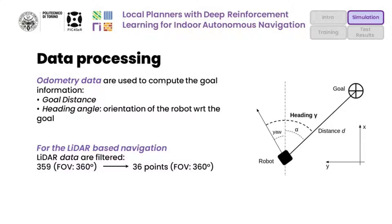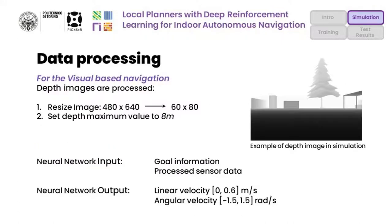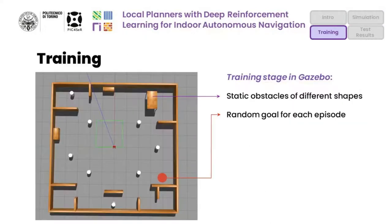For the LiDAR-based navigation, we simply filter the LiDAR points from 360 to 36 points, always keeping a field of view of 360 degrees. For the visual-based navigation, we resize the image from a higher resolution to a lower one, and then we set the depth maximum value to 8 meters. The neural network input is composed of the goal information and the processed sensor data, and maps an output composed of a linear velocity and an angular velocity.